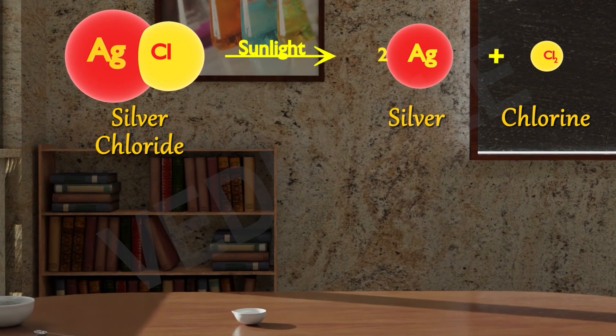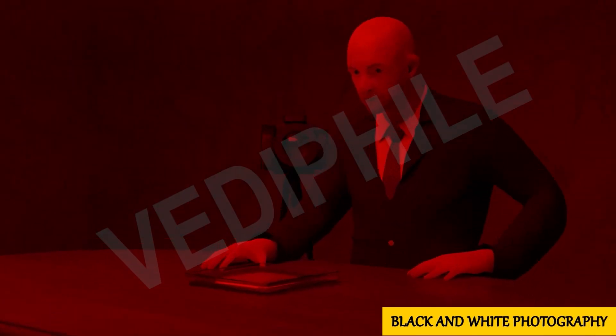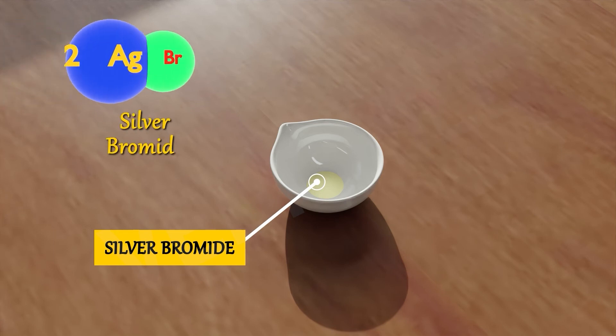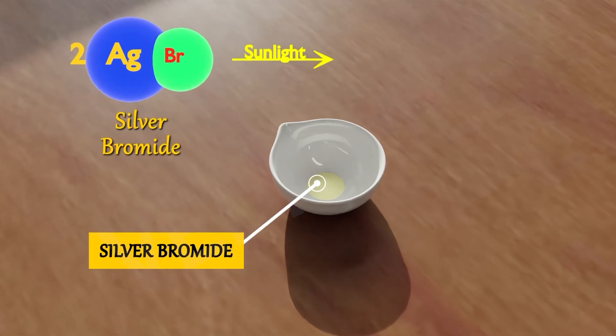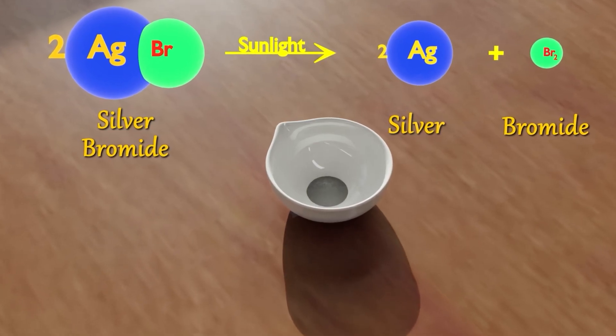This reaction is used in black and white photography. And the same will happen with silver bromide. If we give sunlight to silver bromide, it will produce silver and bromide, just like the last reaction.